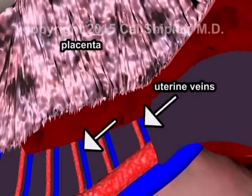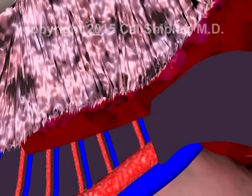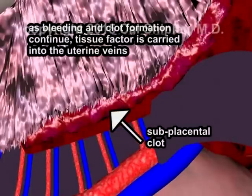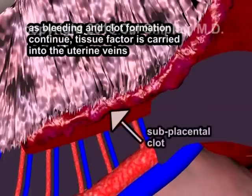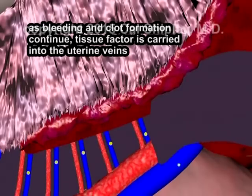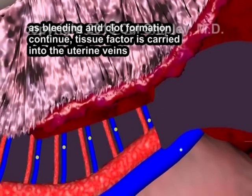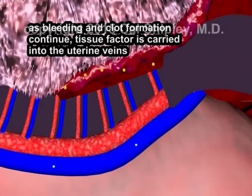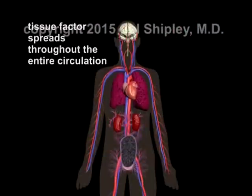Placental abruption results in the rupture of attached veins, as well as arteries. Tissue factor continues to be secreted and eventually enters the vascular system via uterine veins, from which it spreads throughout the circulatory system.